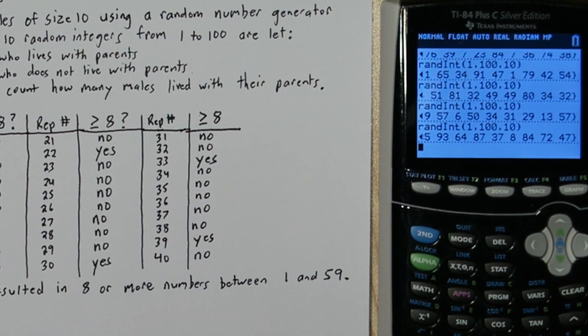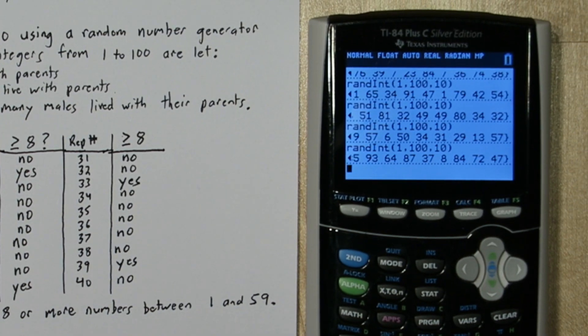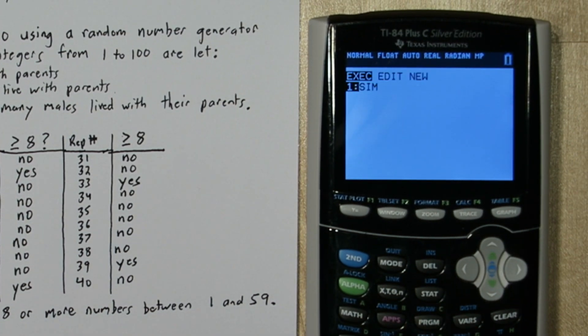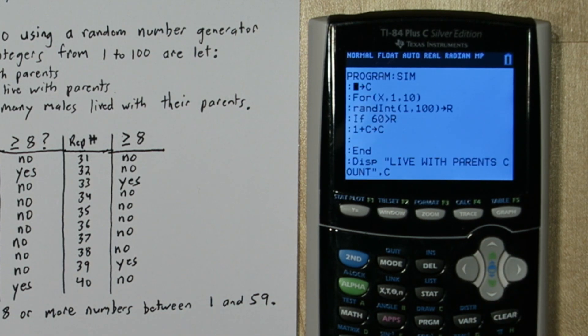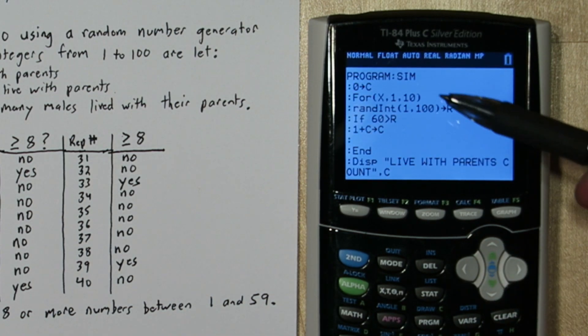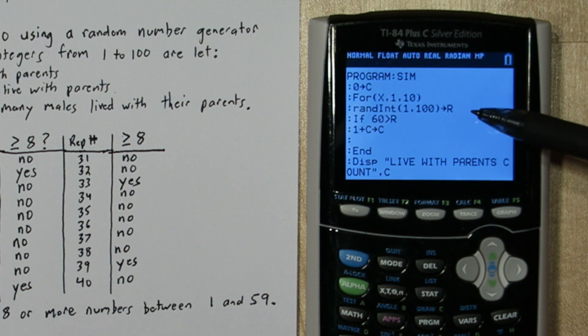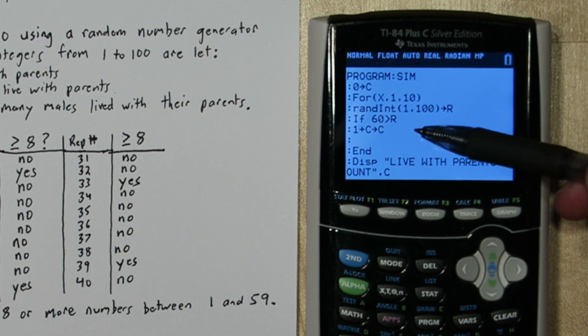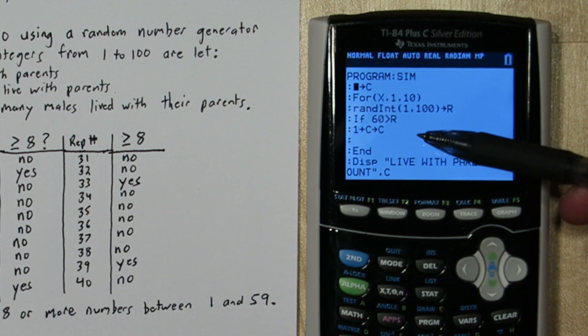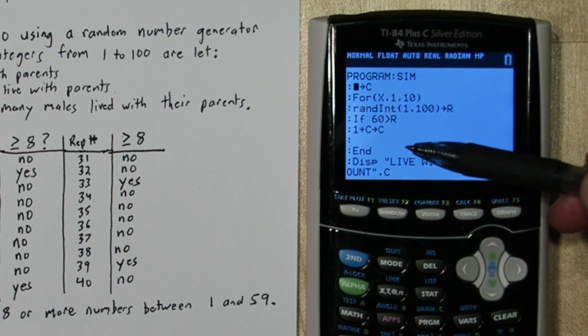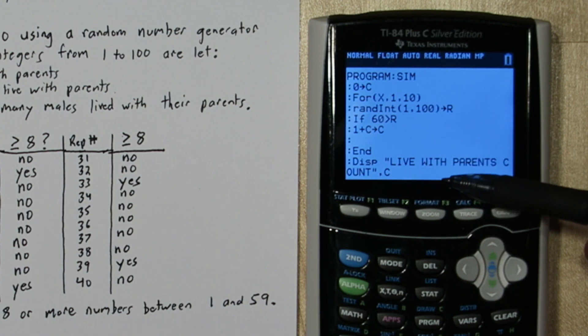Now before we move on to conclude let me show you another way you can simulate. If you press the program button you can write your own programs. So I'm going to press edit and look at this program sim I wrote. All this program does is it generates 10 random numbers. It checks if the numbers are less than 60. So in other words if they're between 1 and 59. And it counts how many of our 10 random numbers are between 1 and 59. And then it displays how many numbers were between 1 and 59.